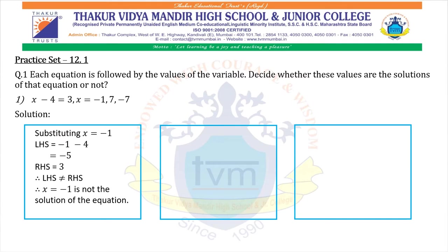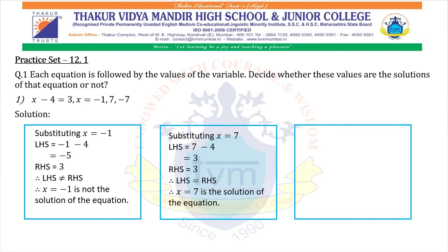First, substituting x equals minus 1: LHS equals minus 1 minus 4, so we get minus 5. RHS equals 3. Therefore LHS is not equal to RHS, so x equals minus 1 is not the solution of the equation. Now substituting x equals 7: LHS equals 7 minus 4, that is 3. RHS equals 3. Therefore LHS equals RHS, so x equals 7 is the solution of the equation.